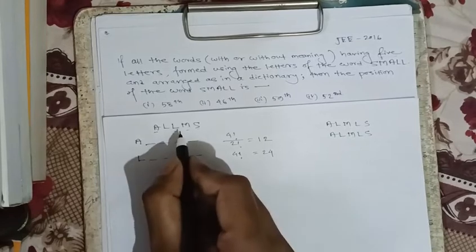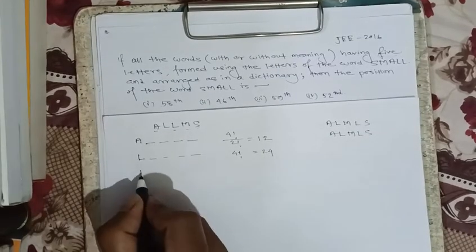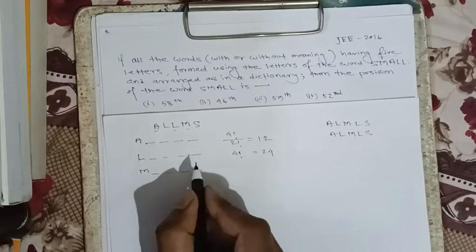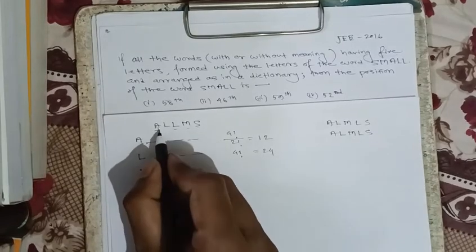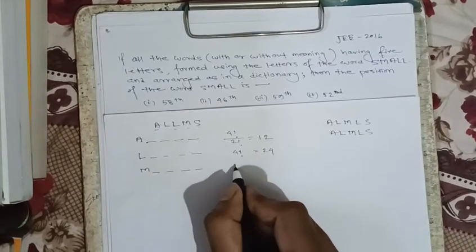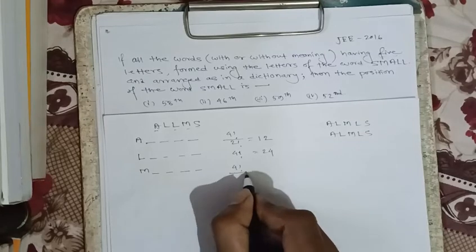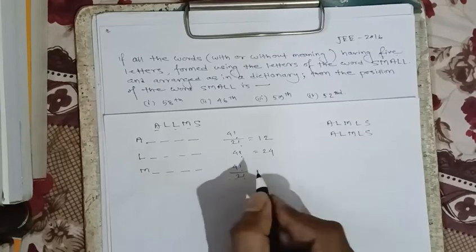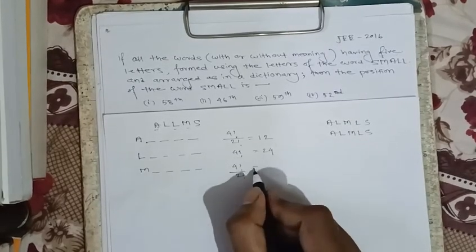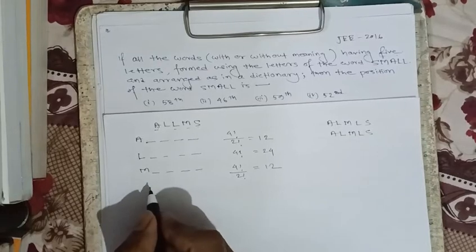Now, for words starting with 'm': we fix 'm' and the remaining 4 letters can be arranged in 4 factorial by 2 factorial ways, because there are 2 l's among the remaining letters. This gives 4!/2! = 12 words.